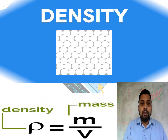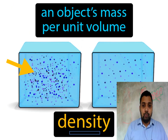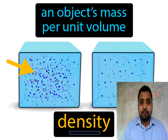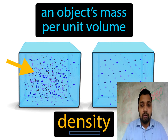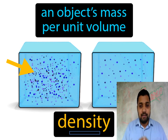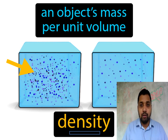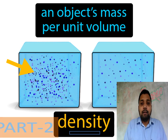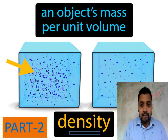So here we are going to discuss more aspects of density and some numerical problems on density. An object's mass per unit volume — or mass divided by volume — is its density. Let's start Part 2 and look at numerical problems based on the relation: density = mass / volume.